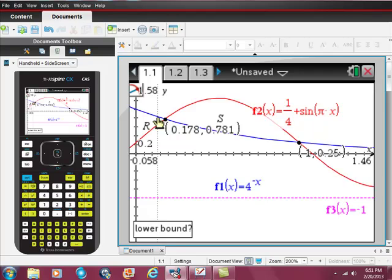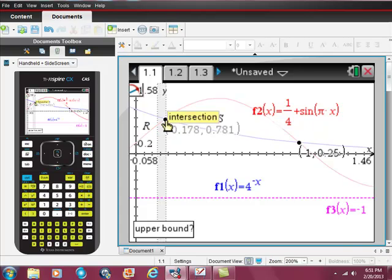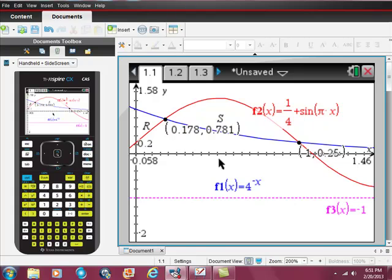And then look, it says lower bound. At the bottom left of the screen, it says lower bound. And what it wants is some point to the left of that point right there. So to the left of that. And now it says upper bound. So it wants something to the right of where I think the intersection is. And it gave me this number. Remember, I did exactly the same thing here to get that value.